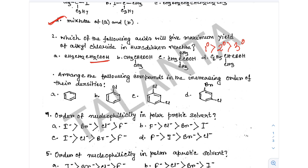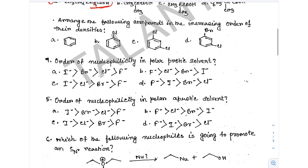The steric factor and steric crowding is least for the 1-degree compound, so this is the fastest reaction.